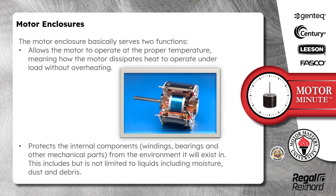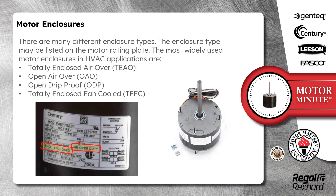This includes but is not limited to liquids including moisture, dust, and debris. There are many different enclosure types, and the enclosure type may be listed on the motor rating plate. The most widely used motor enclosures in HVAC applications are totally enclosed air over, open air over, open drip proof, and totally enclosed fan cooled.